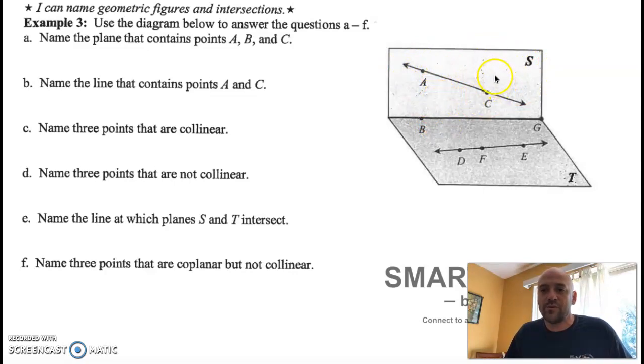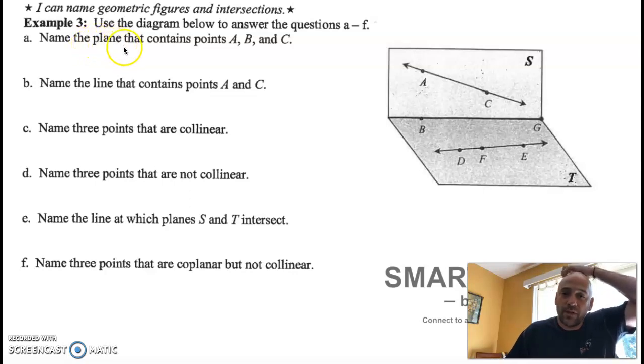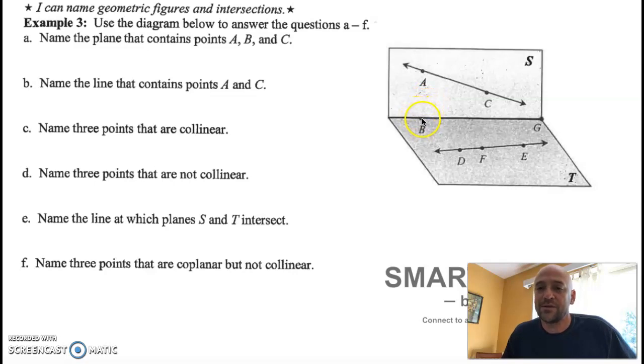So let's analyze this picture here. This plane, the way it's drawn, it's a little bit more vertical. And then this plane right here is a little bit more horizontal. So the way it looks, honestly, think of a laptop. This plane that's kind of shaded and darker is like your keyboard. This plane, S, is more like your screen. They are intersecting right here at this line that contains B and G. So part A. Name the plane that contains points A, B, and C. B is on the intersection. That means point B is really on both planes. So the plane that contains points A, B, and C, that's plane S.